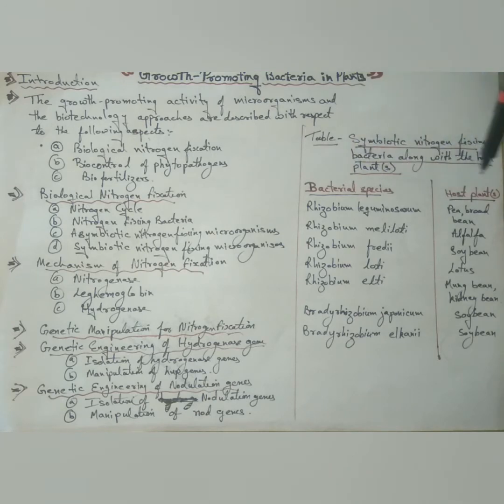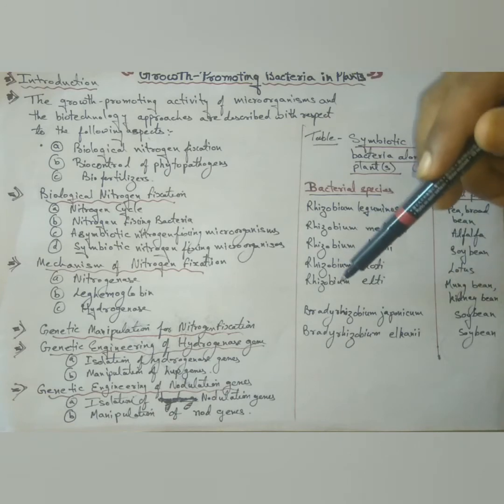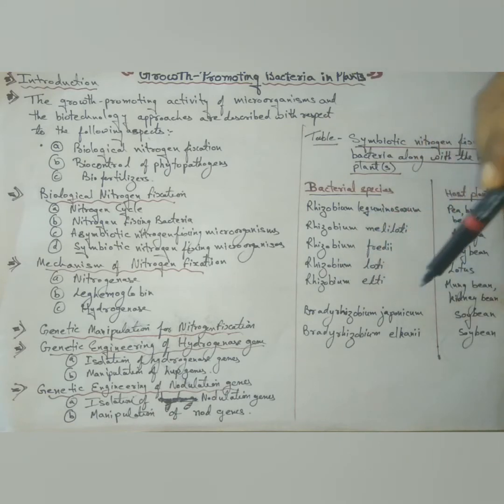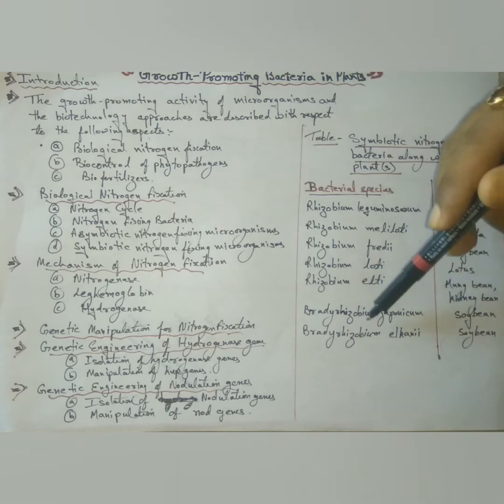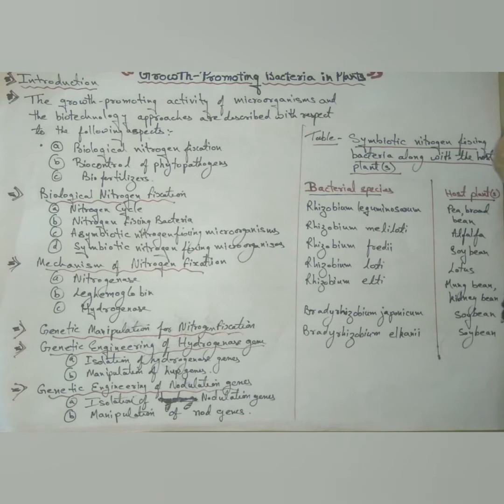This is the symbiotic nitrogen-fixing bacteria along with the host plants. Bacterial species and host plants: Rhizobium leguminocerum, pea, broad bean; rhizobium meliloti, alfalfa; rhizobium phaseoli, soya bean; rhizobium loti, lotus; rhizobium illiti, moong bean, kidney bean; and bradyrhizobium japonicum, soya bean; and bradyrhizobium elkani.